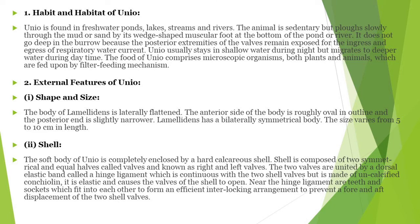If we talk about external structure, then shape and size: the body of Lamellibranchs is laterally flattened. The anterior side is roughly oval in outline. The posterior end is highly narrow. We will see the structure and it will be clear.